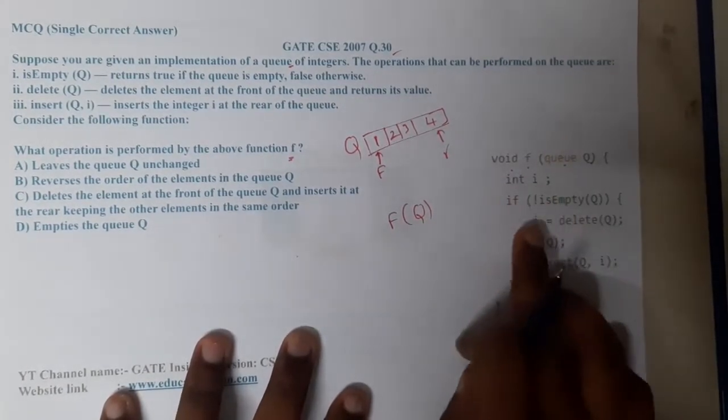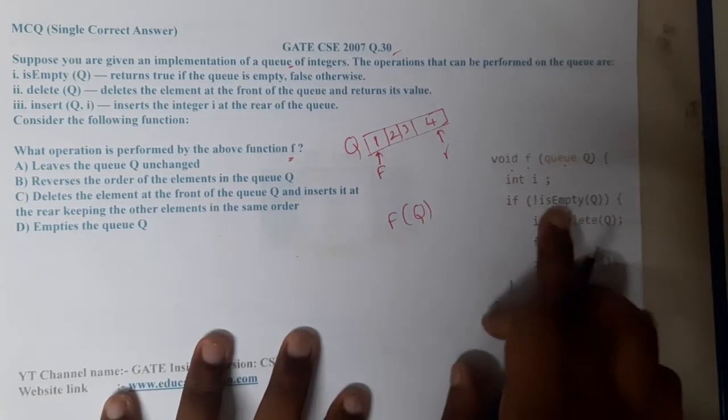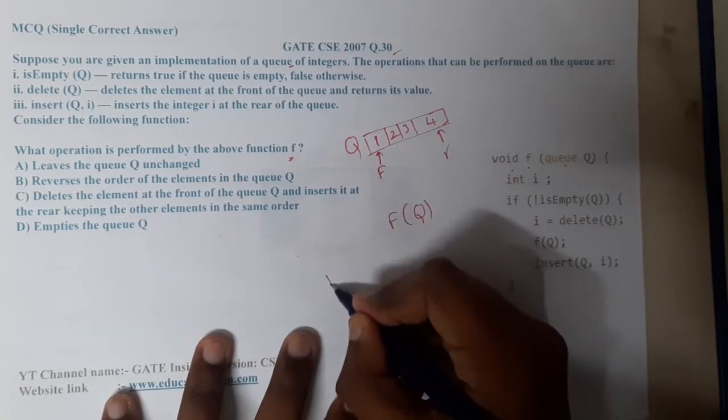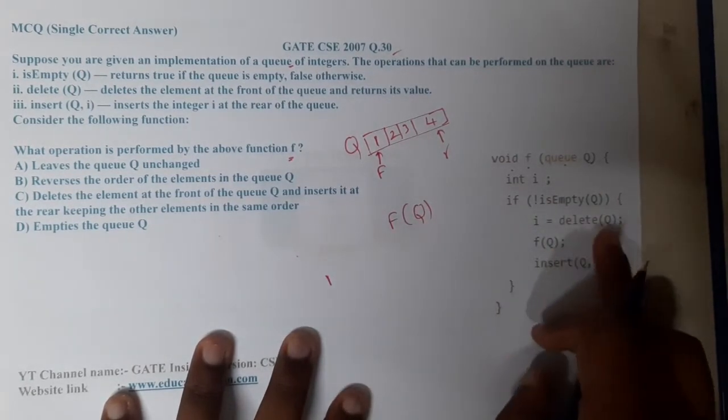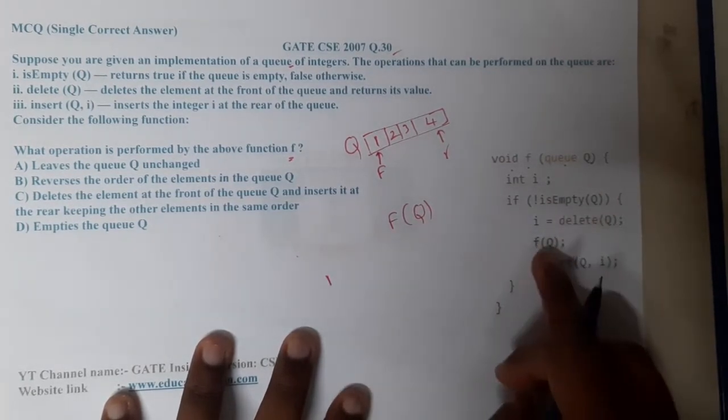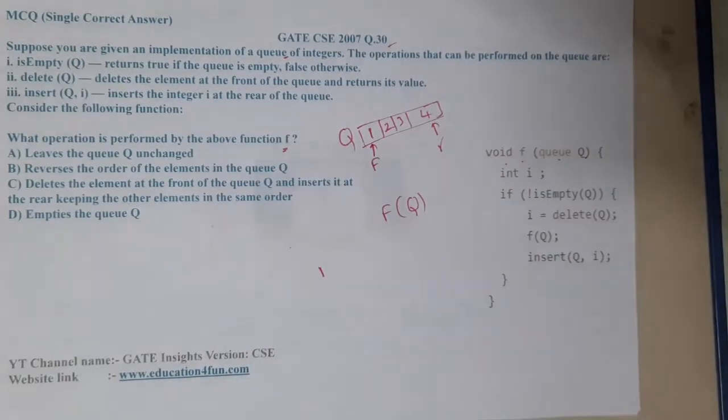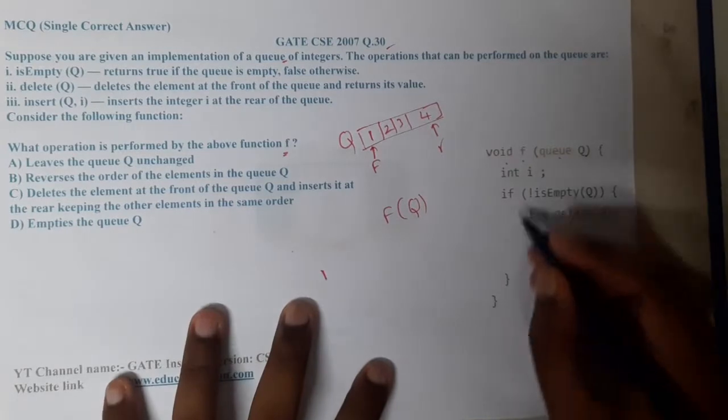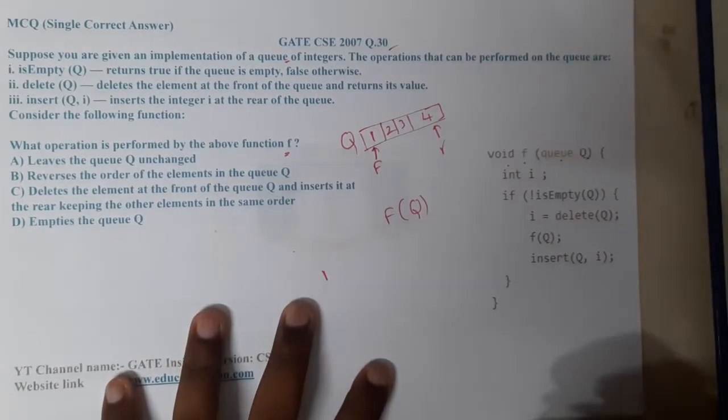If Q is not empty, what we are doing is delete Q. So you are deleting the first element and you are calling F of Q. So now I am getting the thing like it is a recursive call, right? It is calling itself.